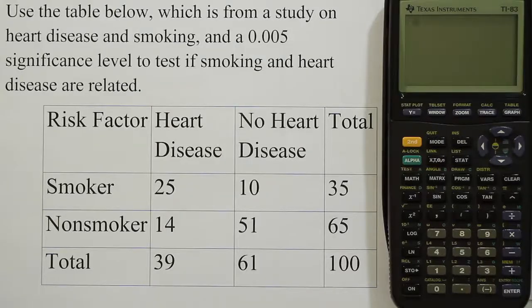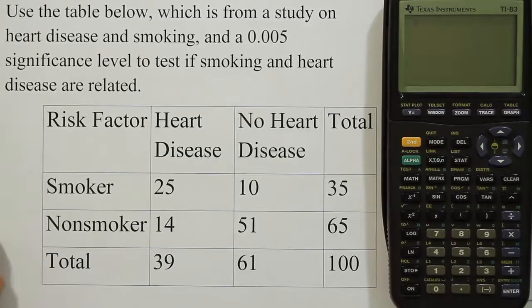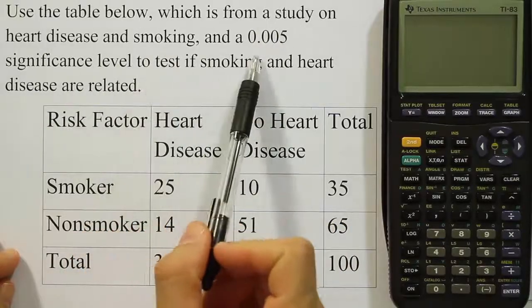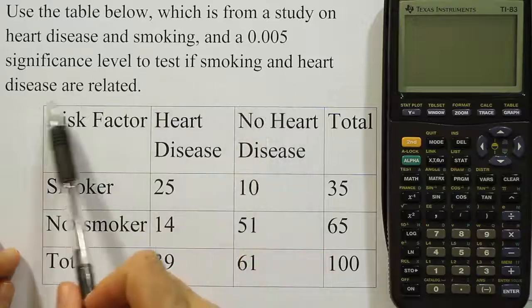In this video we're looking at how to use the graphing calculator to conduct a chi-squared test for independence. This problem uses a table from a study on heart disease and smoking, with a 0.005 significance level to test if smoking and heart disease are related.